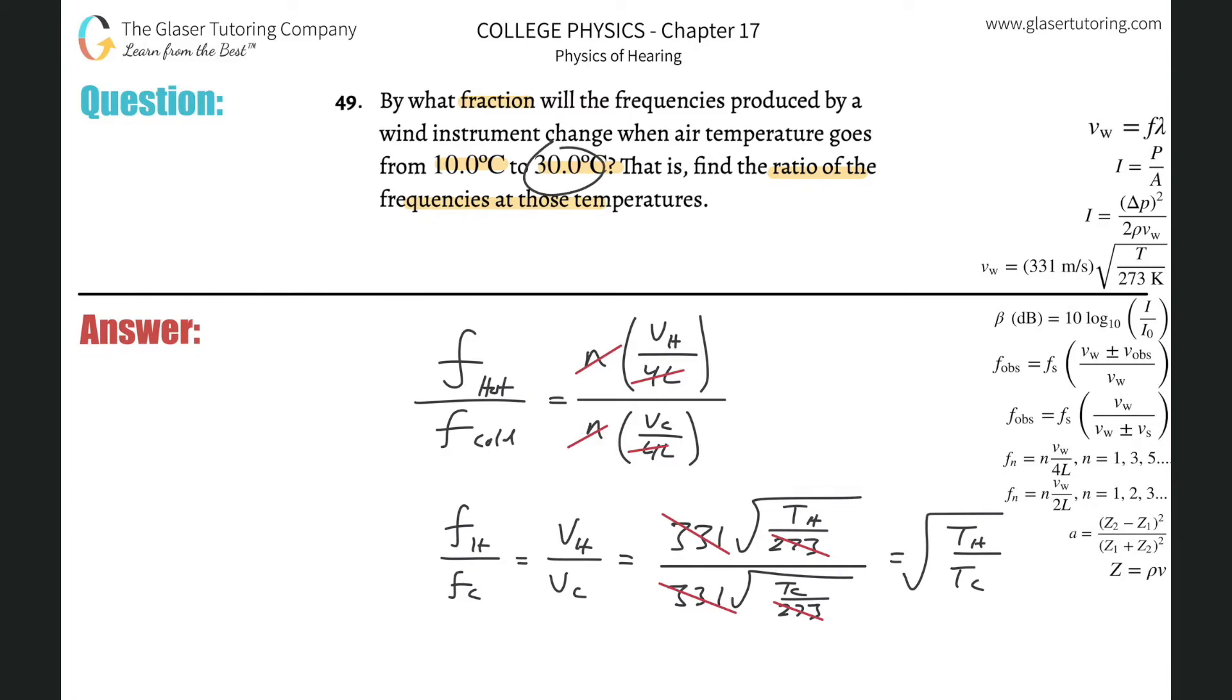30 divided by 10 is going to be different than the Kelvin temperatures. Let's do that out. That's going to be 273 plus 30, which is 303, divided by the cold, which would be 273 plus 10, which is 283. So notice this is 303 over 283. This is different than 30 over 10.